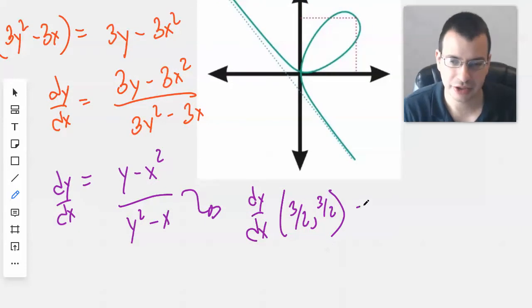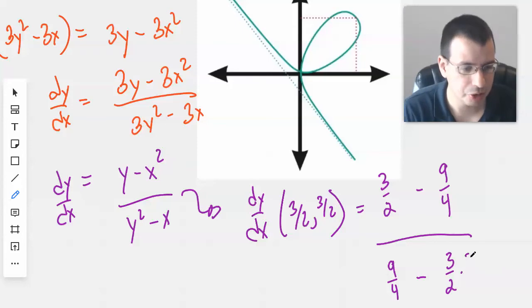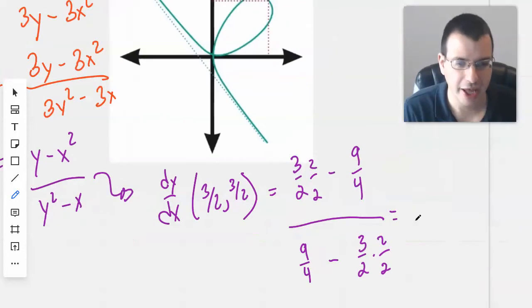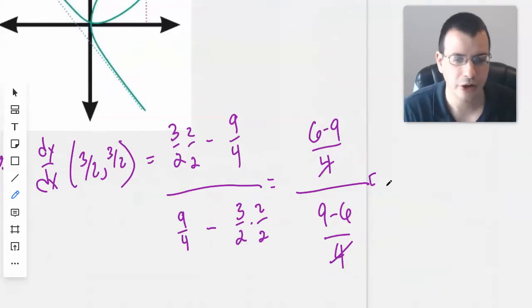This gives us 3 halves minus, leave a little space there as foreshadowing, 3 halves squared is 9 over 4, all over 9 over 4 minus 3 halves. Multiplified by 2 over 2 to help with the fractions. And we have 6 minus 9 over 4 all over 9 minus 6 over 4. Cancel, cancel, cancel, equals negative 3 over 3, which is negative 1.